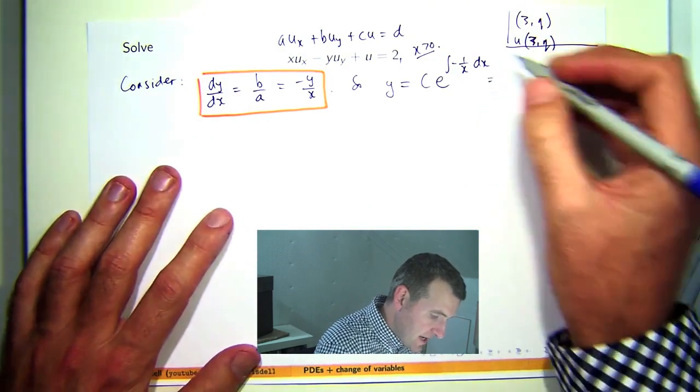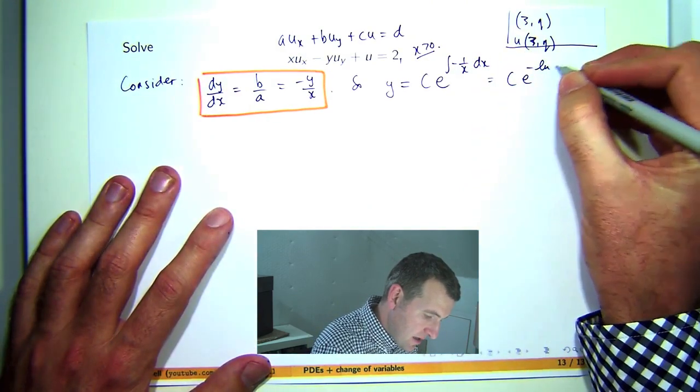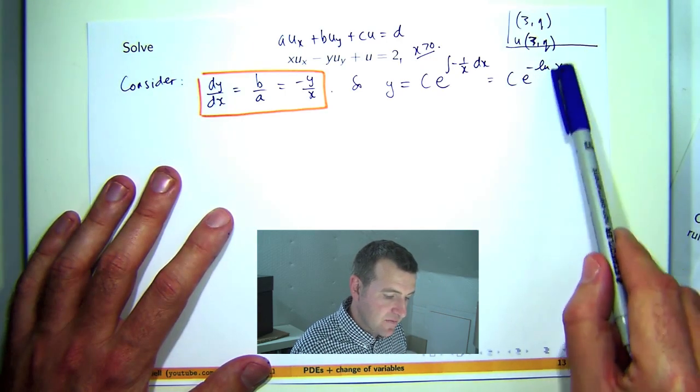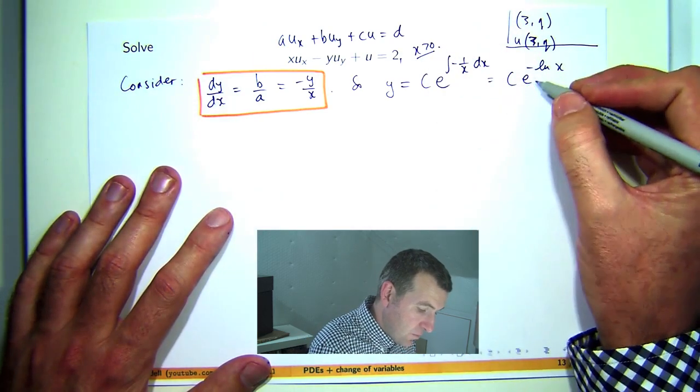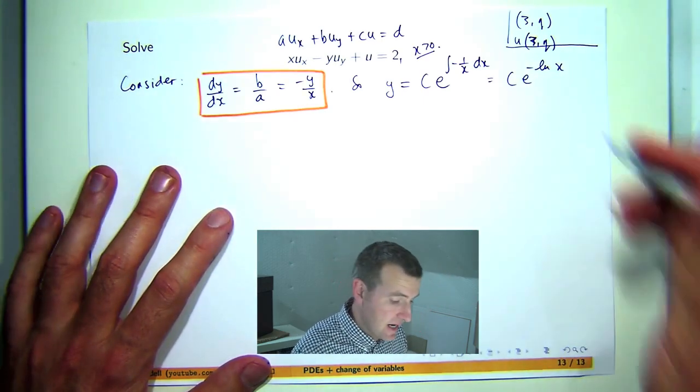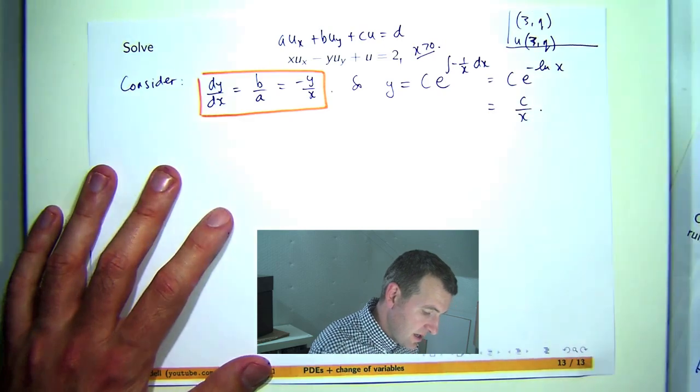So if I integrate negative 1 on x I'll get a logarithm. Usually we would have absolute value signs there but x is positive so we don't need them. This is just 1 over e to the log x and e and log x are inverses of each other so I'll get the following.